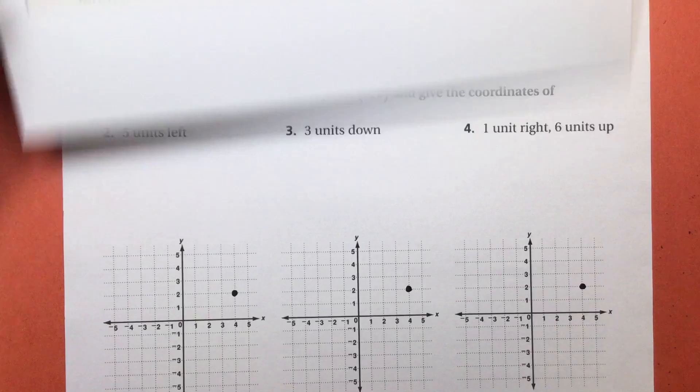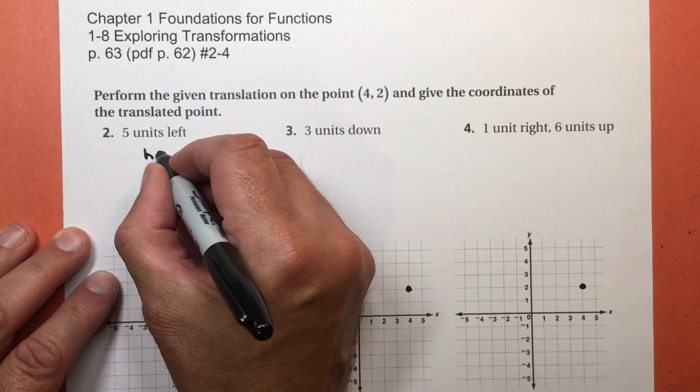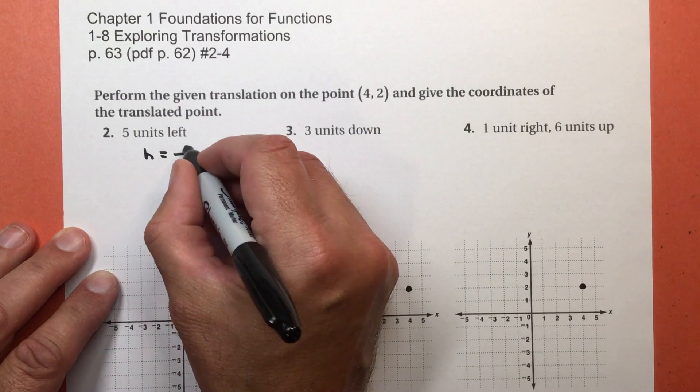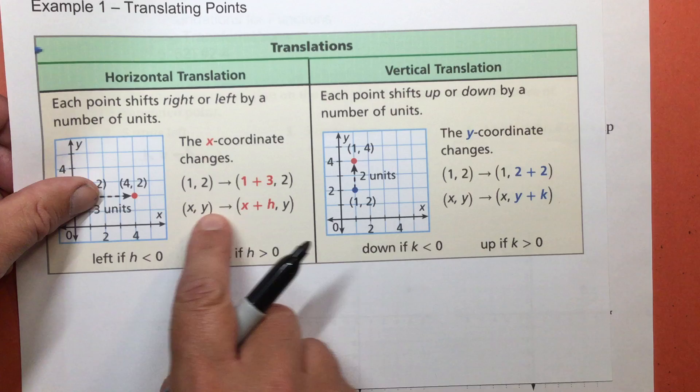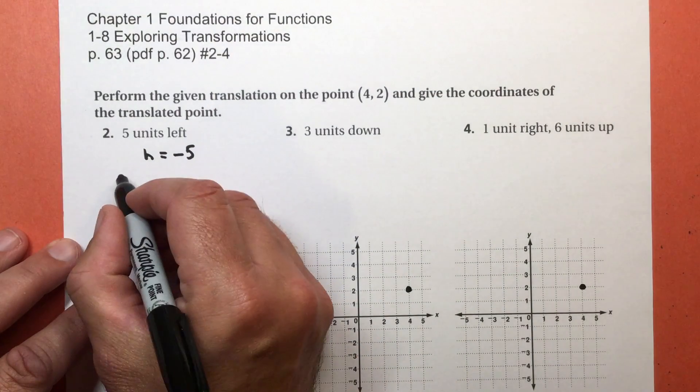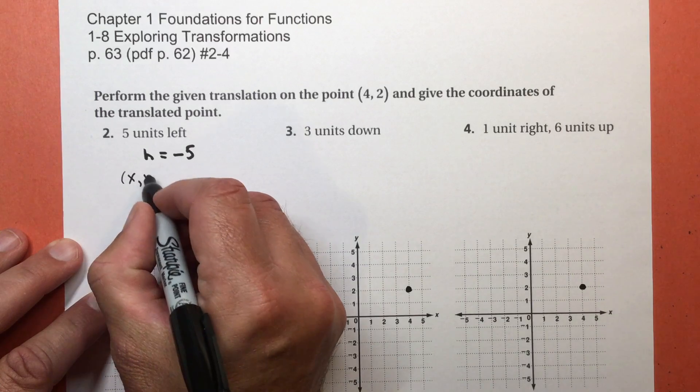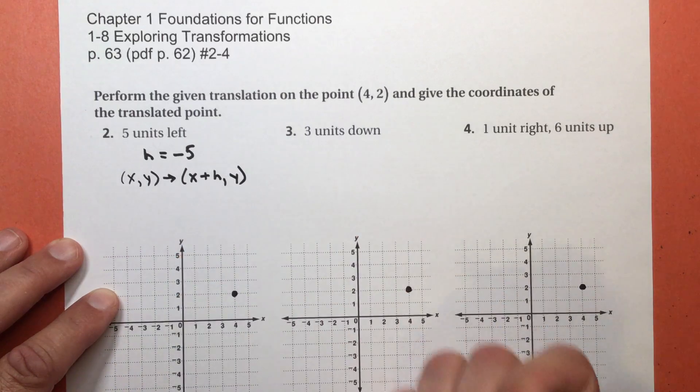It's left if the number that I'm adding is negative. So if I'm going to go 5 units to the left, that tells me that my h is going to be negative 5. And my rule, my point XY, I'm going to add the h to the x, and I'm going to end up with Y. Y is going to stay the same. So my rule is XY becomes X plus h, and the Y will stay the same.